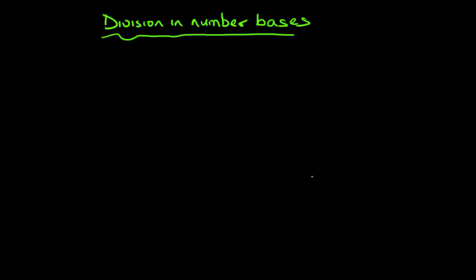I want to re-explain division in number base. Remember in the last video I told you how you can know when a number is smaller or bigger than another number in base two. For example, if I have '11' in base two and I have '101' in base two, definitely '101' is bigger because it has three digits — more digits means bigger.